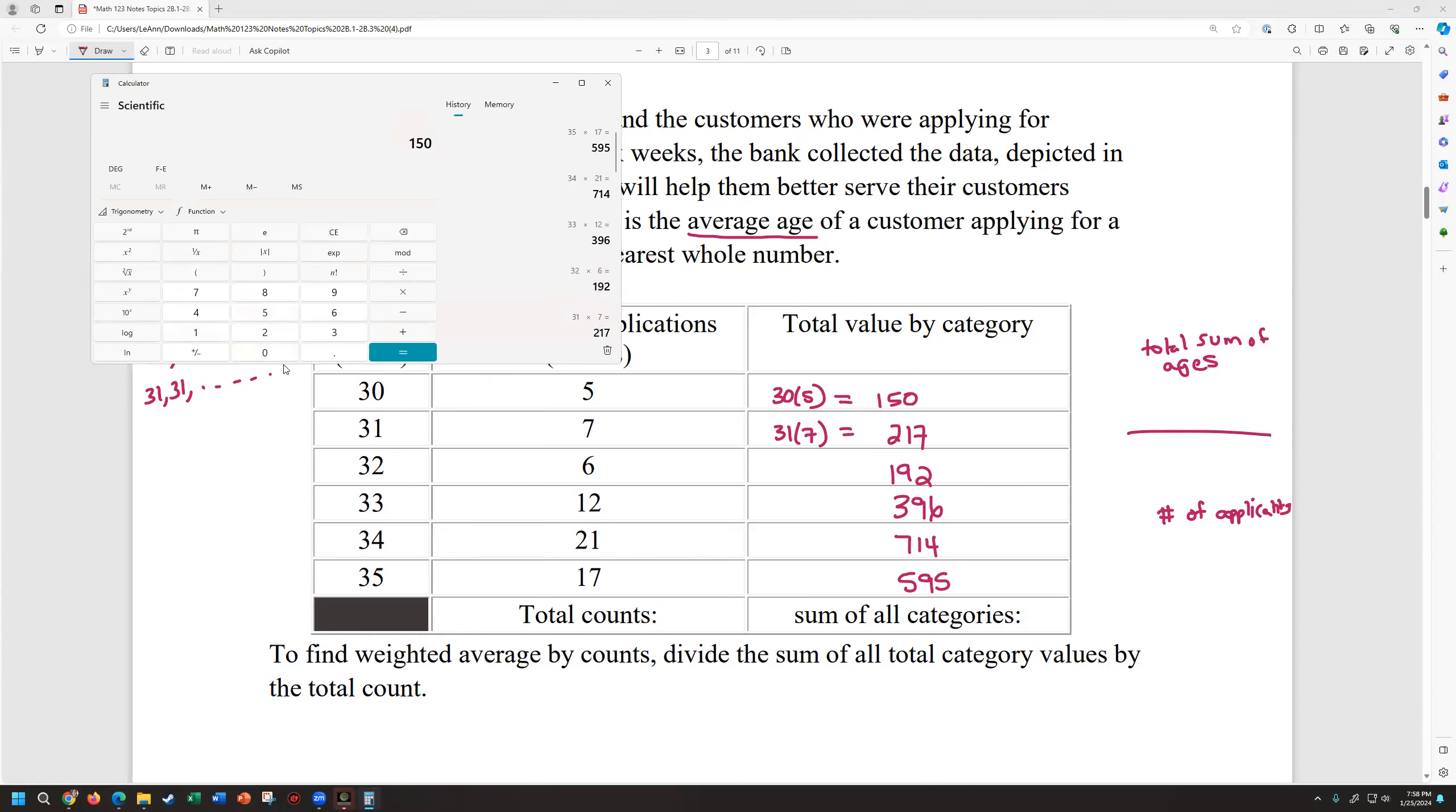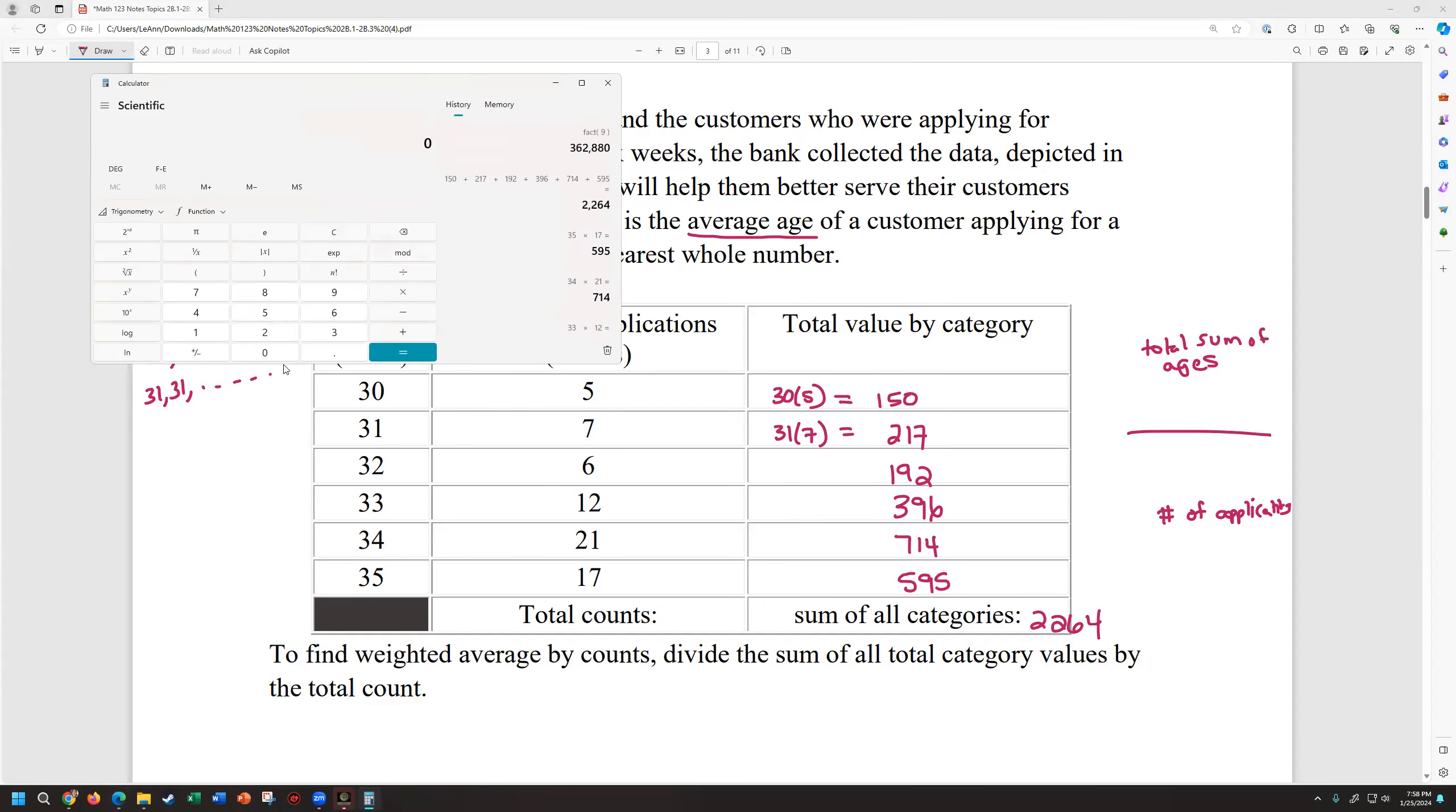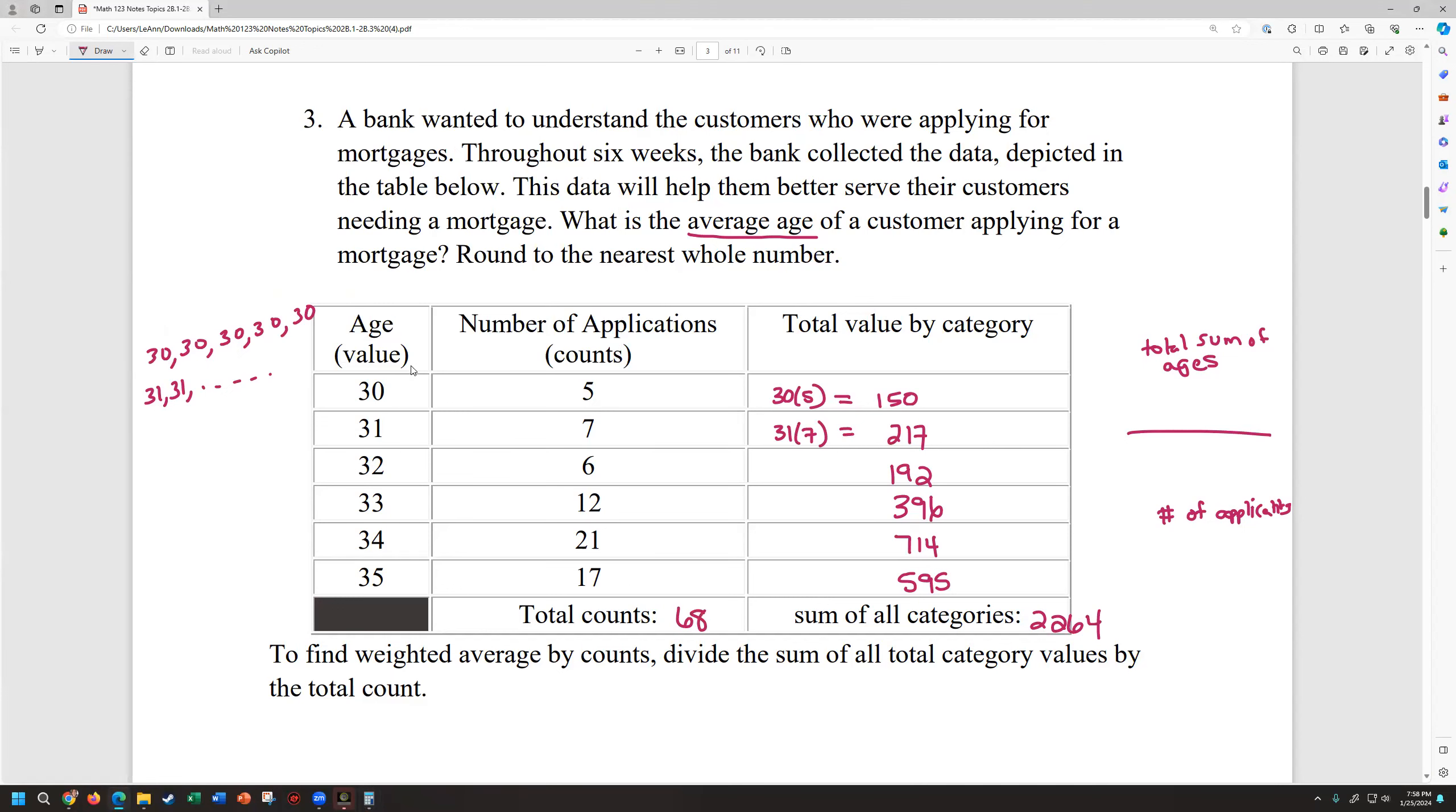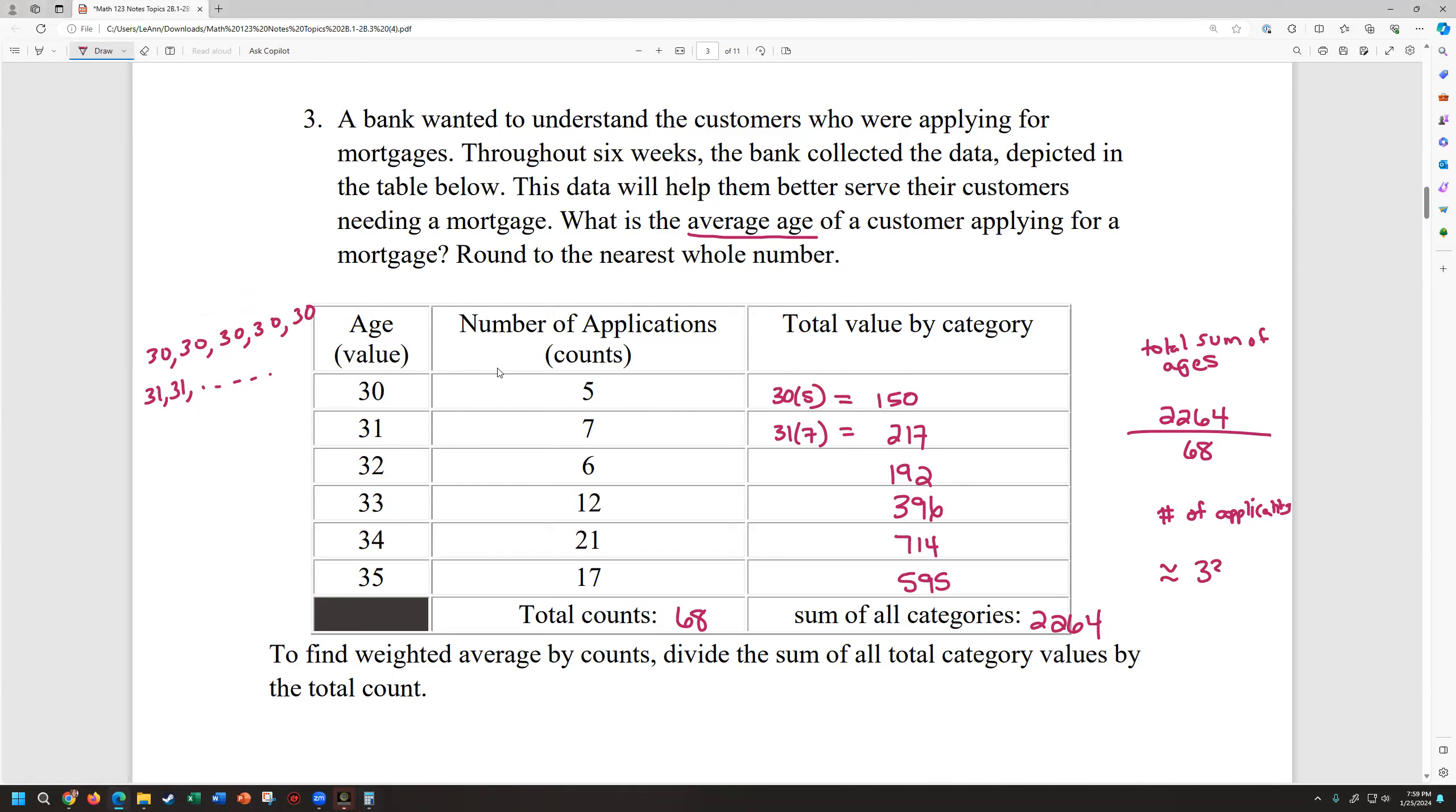And then 35 times 17 is 595. So all of the, remember, this is a sum of all the ages per each age value category. So if we add all those up, that's the sum of all the ages of all of the applicants they saw in those six weeks. 396 plus 714 plus 595. That's 2264. Now the number of applicants is also important because we don't know how to find an average unless we know how many people we were counting essentially. So we do five plus seven plus six plus 12 plus 21 plus 17. They had 68 people come in and actually apply for the mortgage. So the total of all the ages that they saw for those applications were 2264. The number of applications they took in during that time period was 68. If we divide this and then round to the nearest whole number, according to our directions, that'll tell us the average age. So that's about 33 years old.